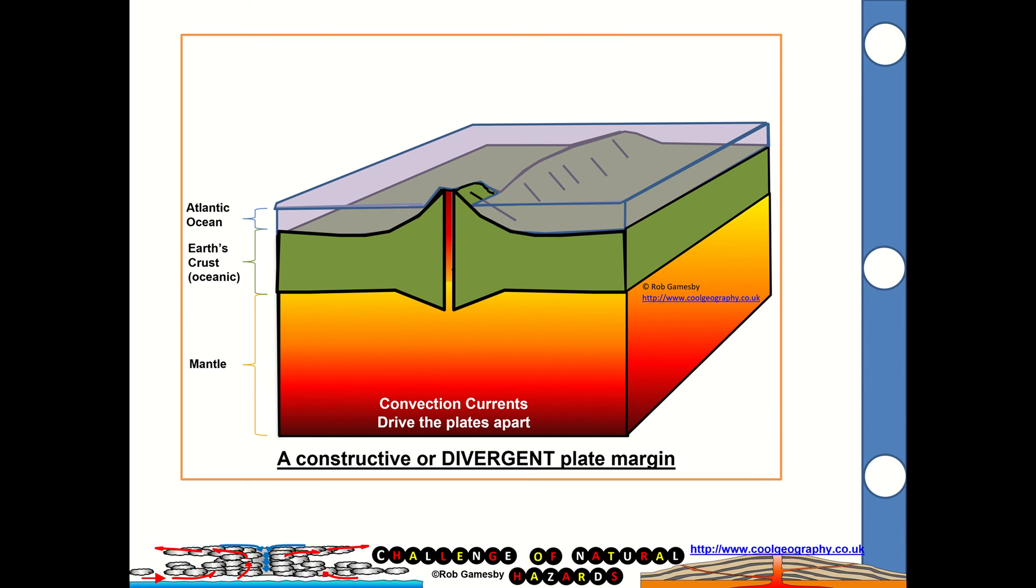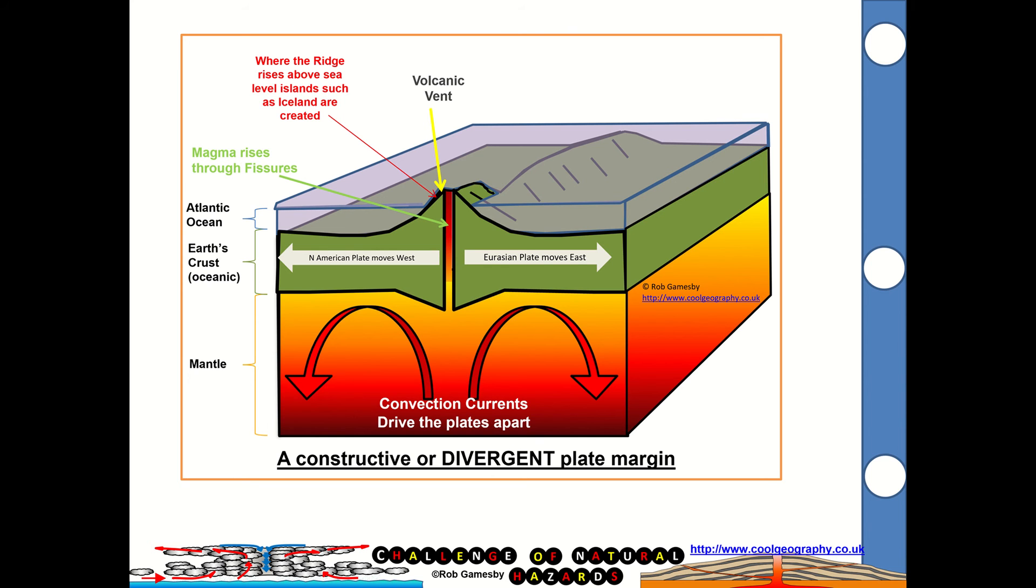The second plate margin type is constructive, or divergent plate margins, where the plates are moving apart. So you can see the convection currents there, moving in opposite directions. So that forces the Eurasian plate to move east, the North American plate to move west. That allows magma to rise up through cracks and gaps in the crust. It'll erupt onto the surface through volcanic vents. And where that emerges above the surface of the water, we get islands like Iceland created. And under the sea, we've got a ridge of submarine mountains and volcanoes created by that ridge as well.